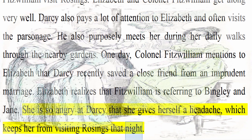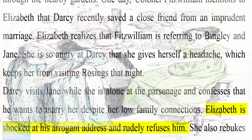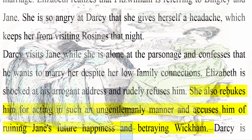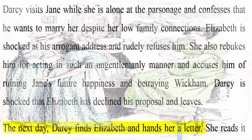Darcy visits Elizabeth while she is alone at the parsonage and confesses that he wants to marry her despite her low family connections. Elizabeth is shocked at his arrogant address and rudely refuses him. She also rebukes him for acting in such an ungentlemanly manner and accuses him of ruining Jane's future happiness and betraying Wickham. Darcy is shocked that Elizabeth has declined his proposal and leaves. The next day, Darcy finds Elizabeth and hands her a letter, which she reads after he is gone.